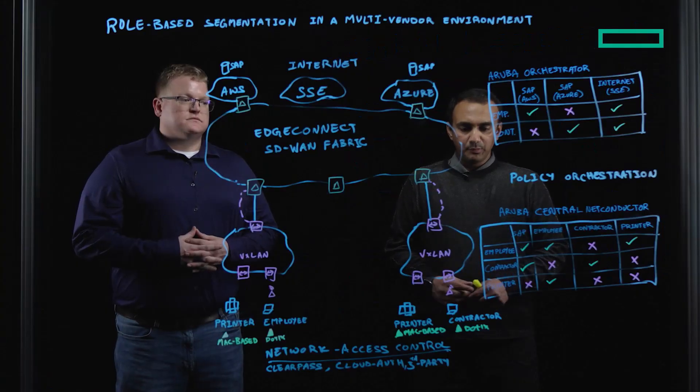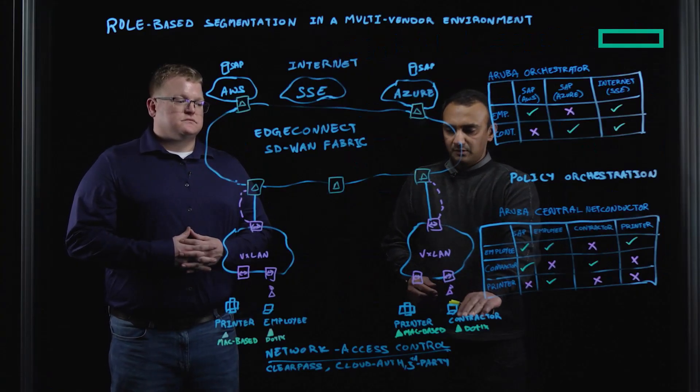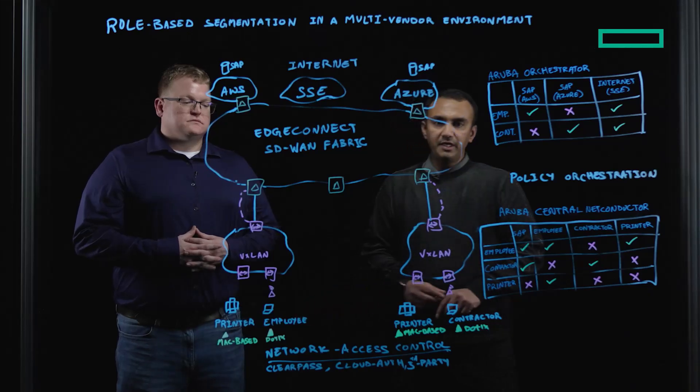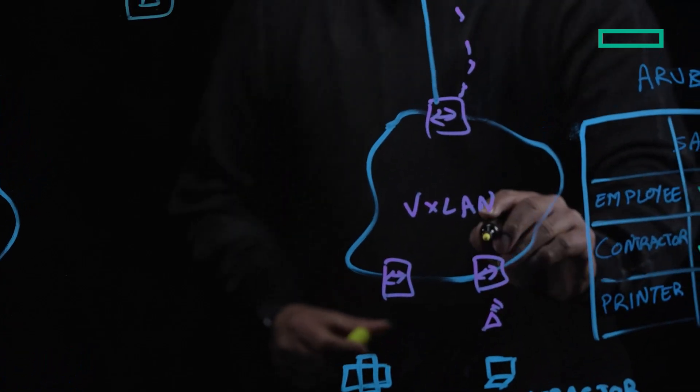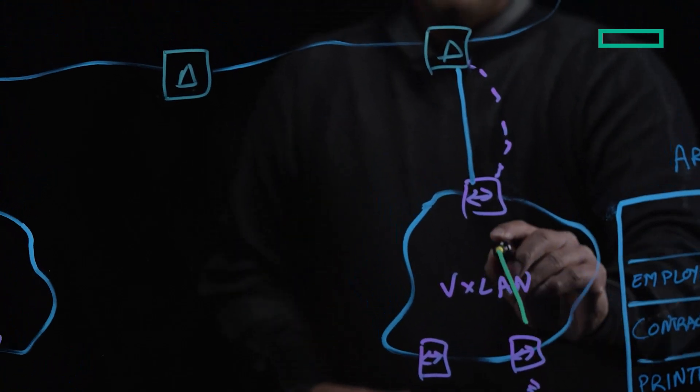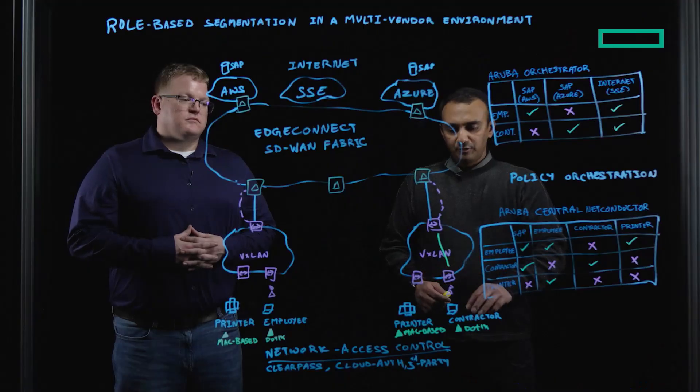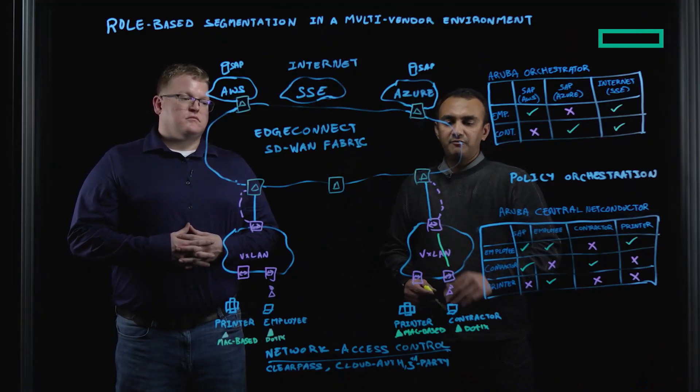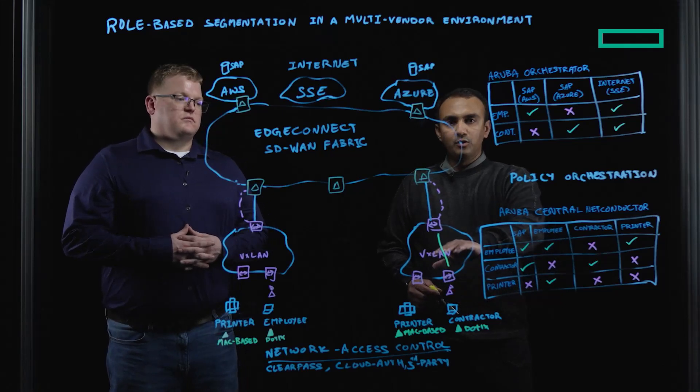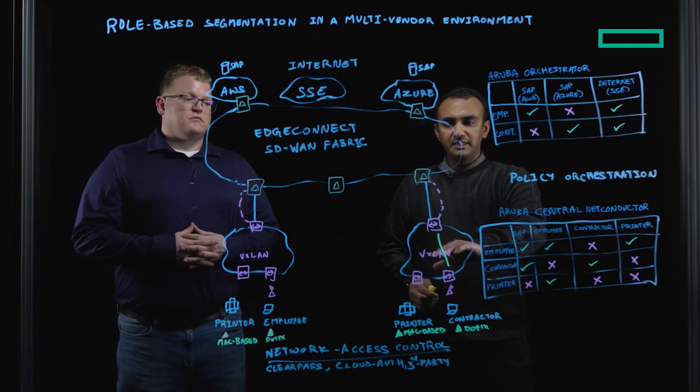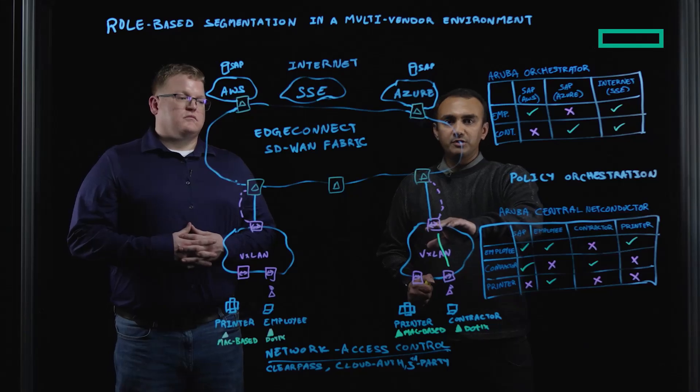In another example, where our contractor is trying to communicate with the employee, the traffic is going to be VXLAN-encapsulated. In the VXLAN-encapsulation, the traffic from the contractor is going to be carried within the VXLAN fabric with the source role information in the data packet until the border.